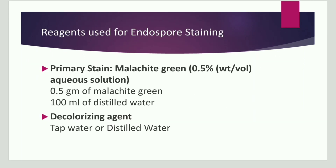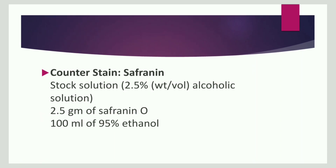The reagents used in endospore staining: the primary stain is malachite green — 3.5 grams of malachite green dissolved in 100 ml of distilled water. The decolorizing agent is either tap water or distilled water. The counterstain is safranin — a stock solution of 2.5 grams of safranin O dissolved in 100 ml of 95% ethanol.